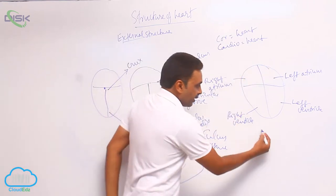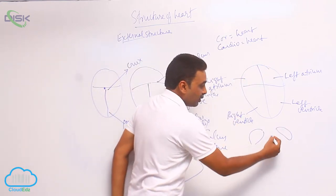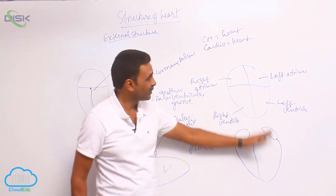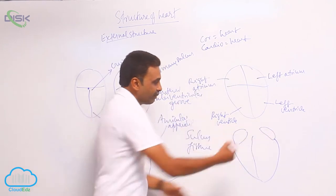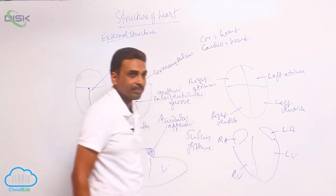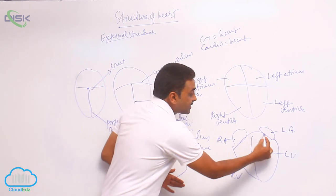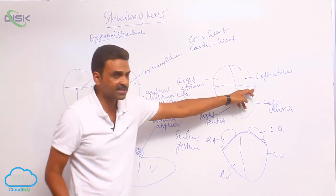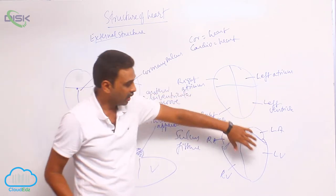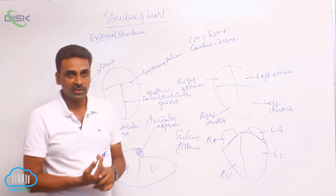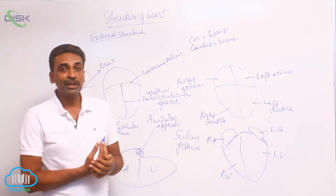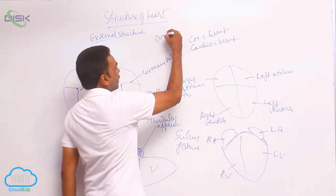Diagrammatically we may draw the chambers as similar in size, but in reality the atria are small and the ventricles are large. The left atrium, right atrium, left ventricle, and right ventricle are arranged accordingly, and the coronary sulcus sits between the atria and the larger ventricles. In the coronary sulcus you can also see the two coronary arteries.